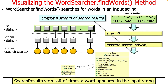searchForWord returns something called a SearchResult, so what we end up with from map is a stream of search results. A SearchResult is an object that contains an internal list of Result objects, and a Result object keeps track of where that word appeared in the input string. If there was a match, there will be matches there; if not, the SearchResult object will have an empty list.